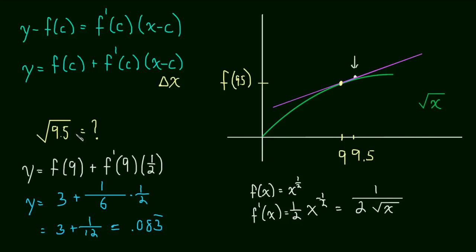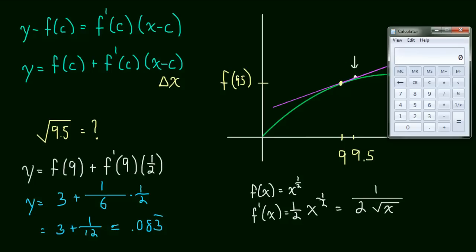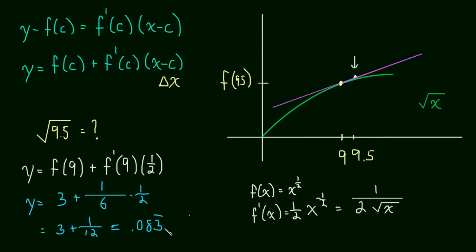Okay, and what is the actual value of the square root of 9.5? So how good was our approximation? Square root of 9.5 is 3.0822. So the actual value was, oh sorry, this is 3.0833. And then the actual value up here was actually 3.082. So we're off by about .001. That's not too bad. Our approximation in this case was pretty decent. We're only off by .001.